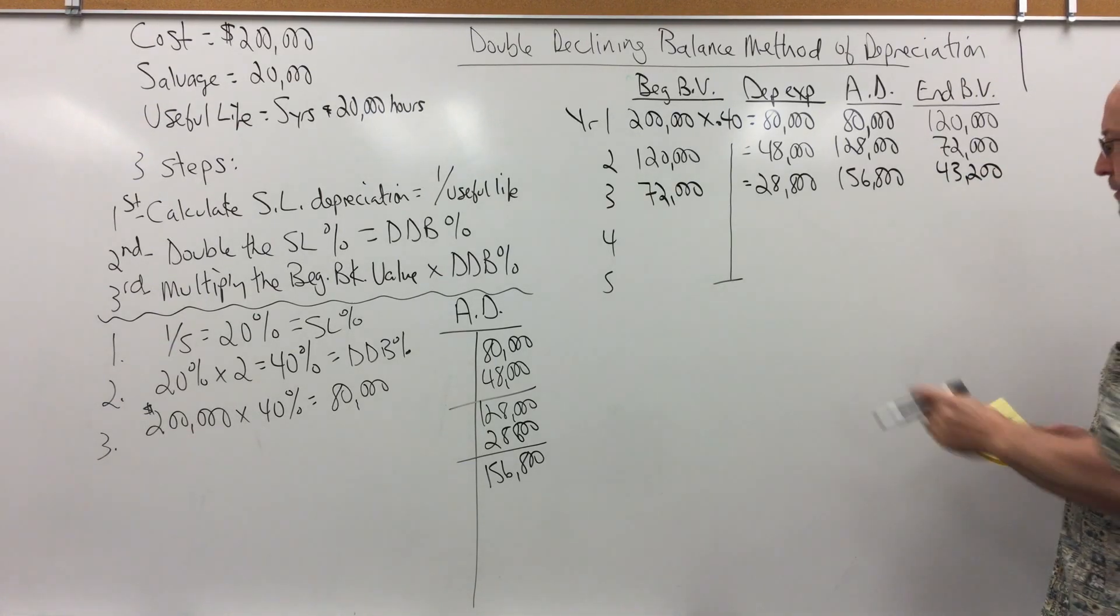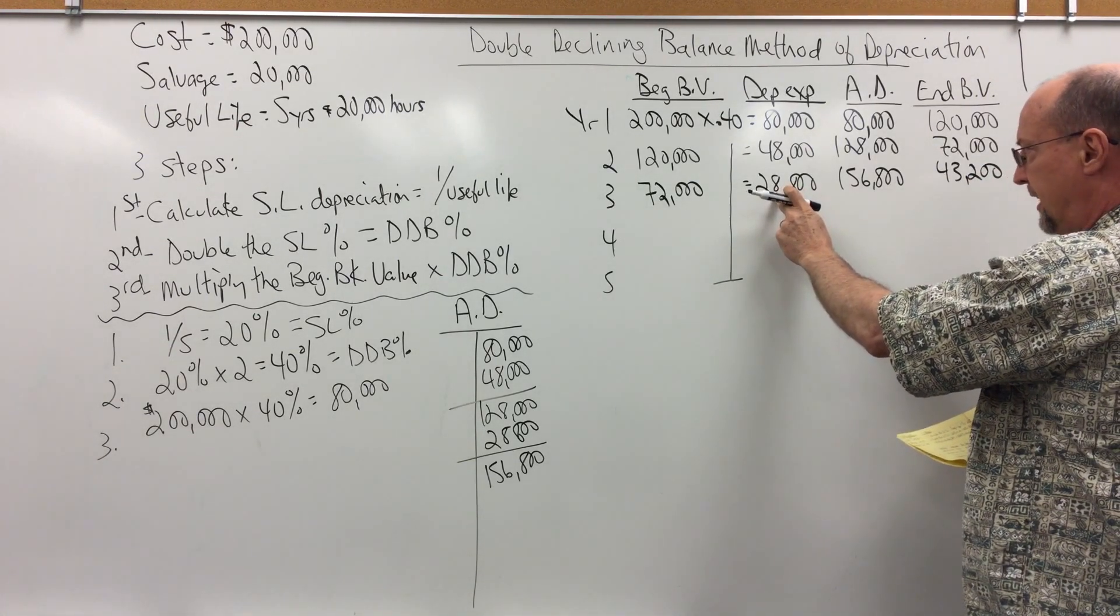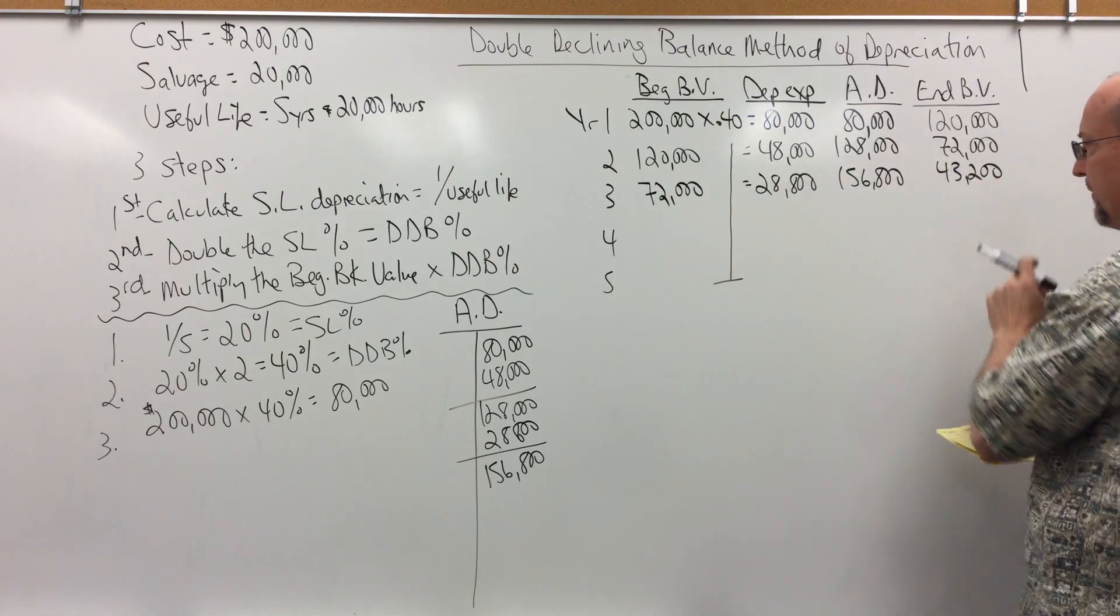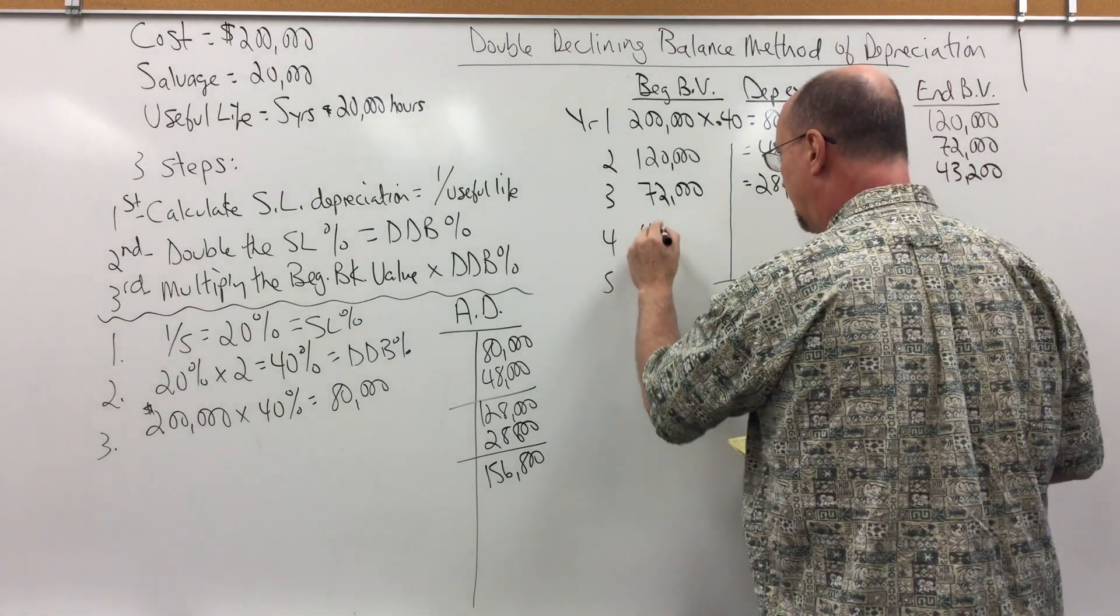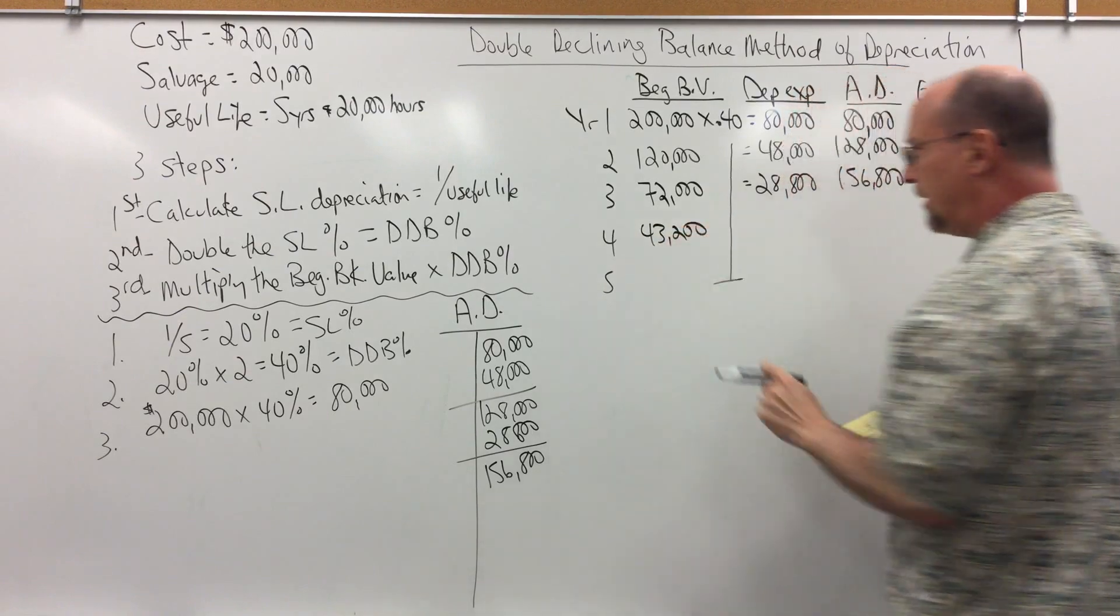Okay, so again, this is the depreciation expense in year 3. Here's the ending book value of year 3. That becomes beginning book value in year 4.